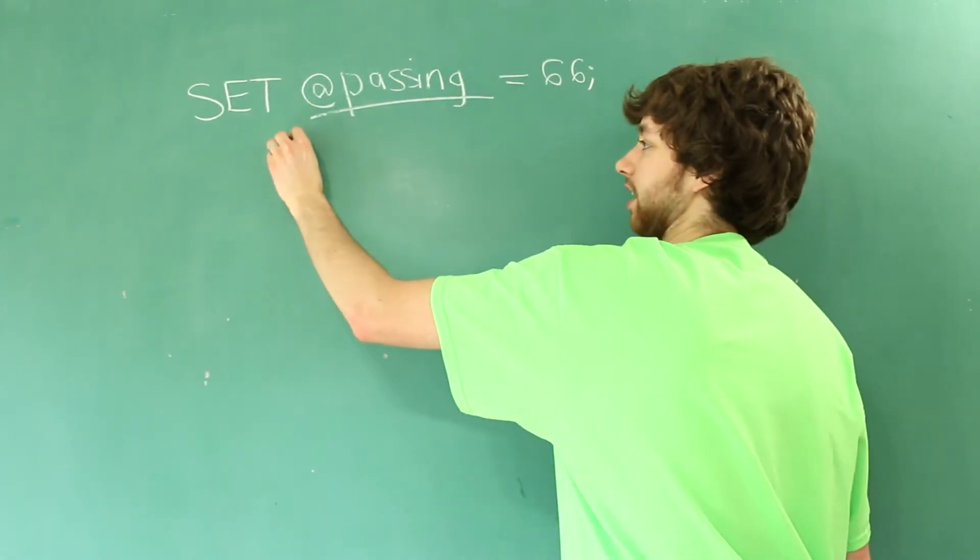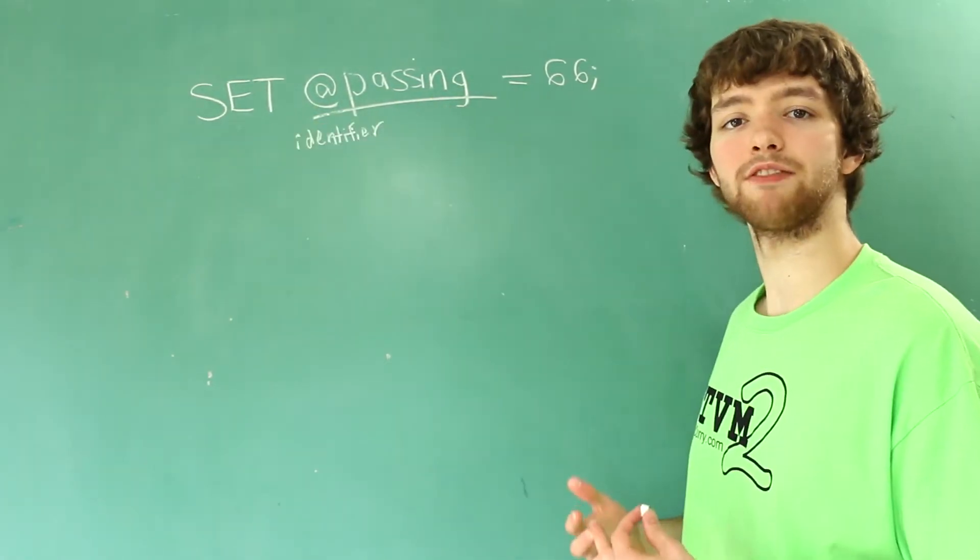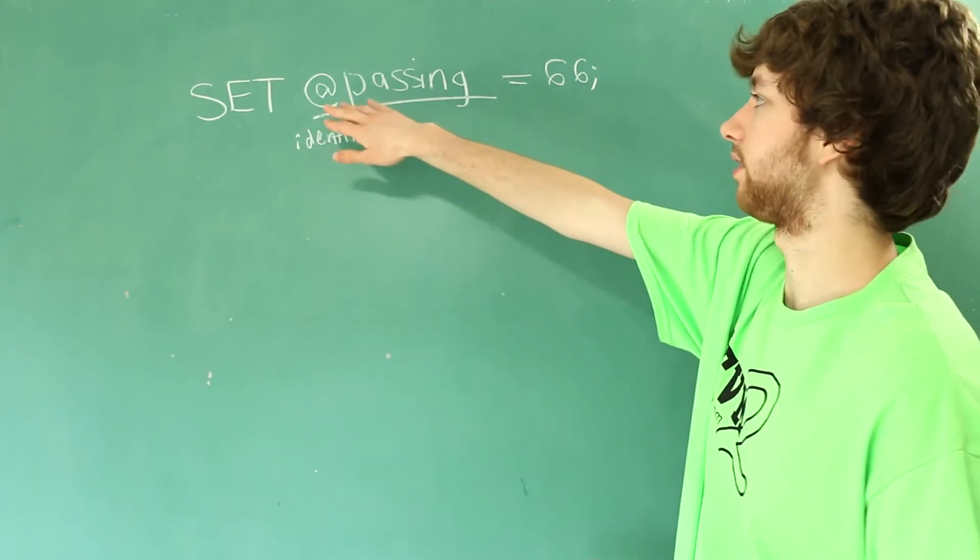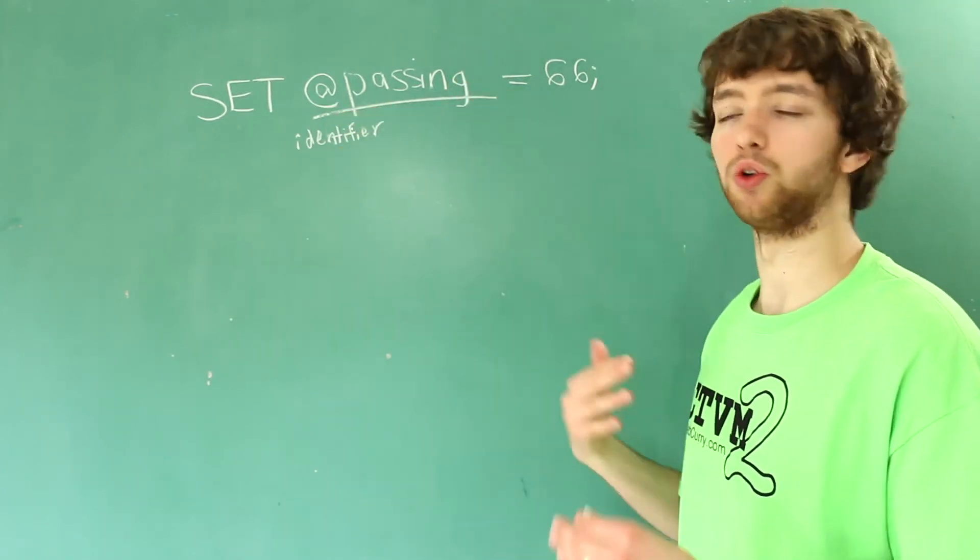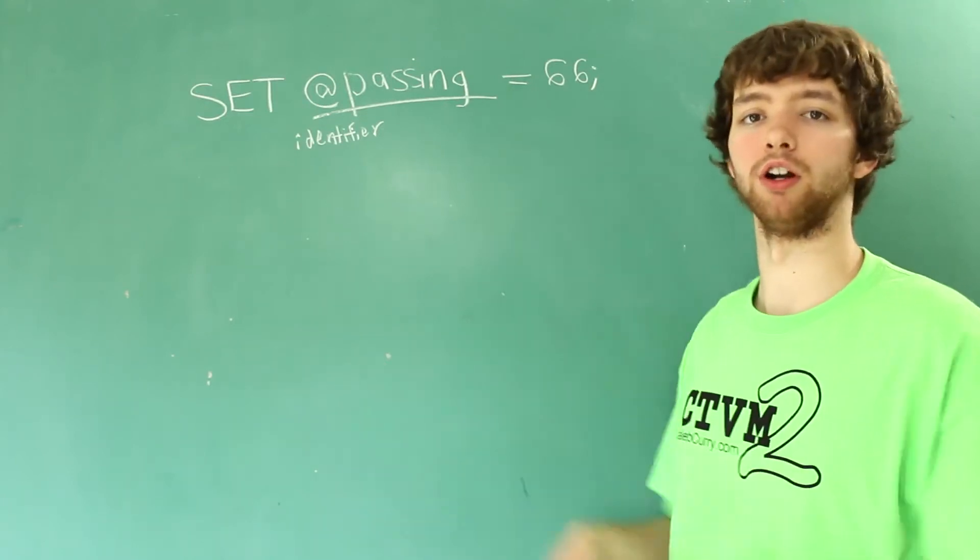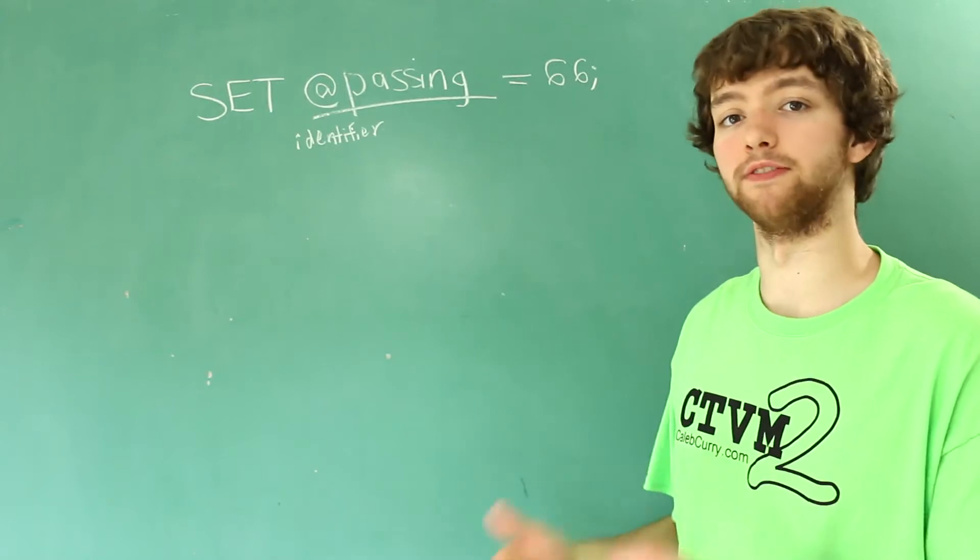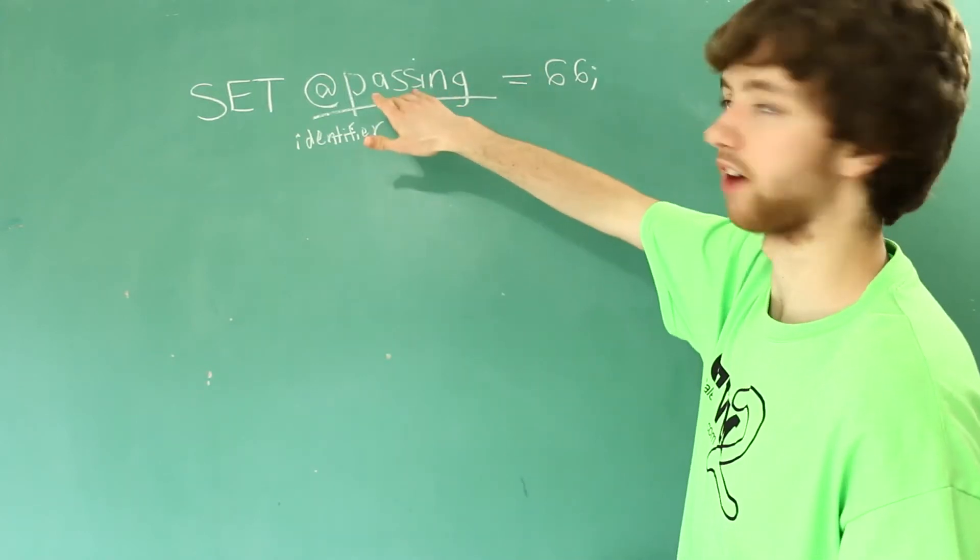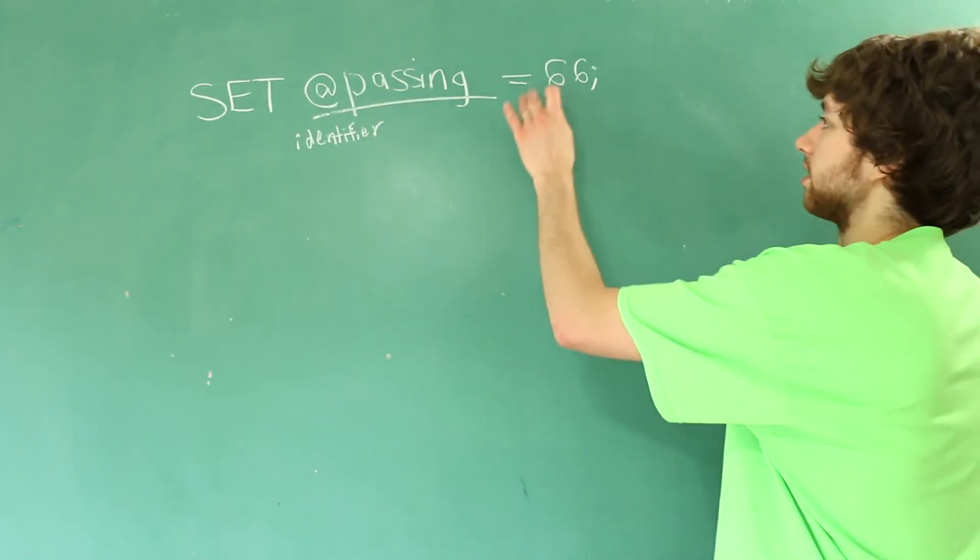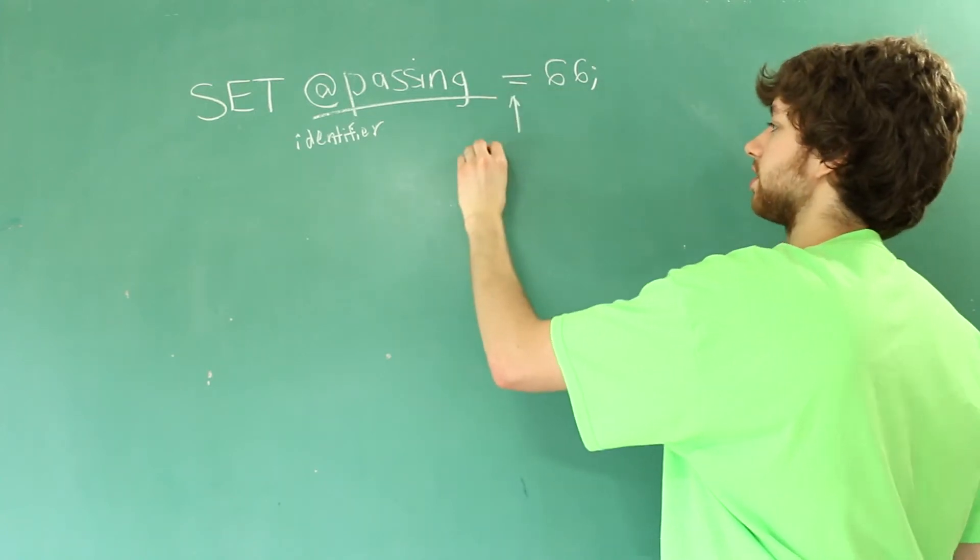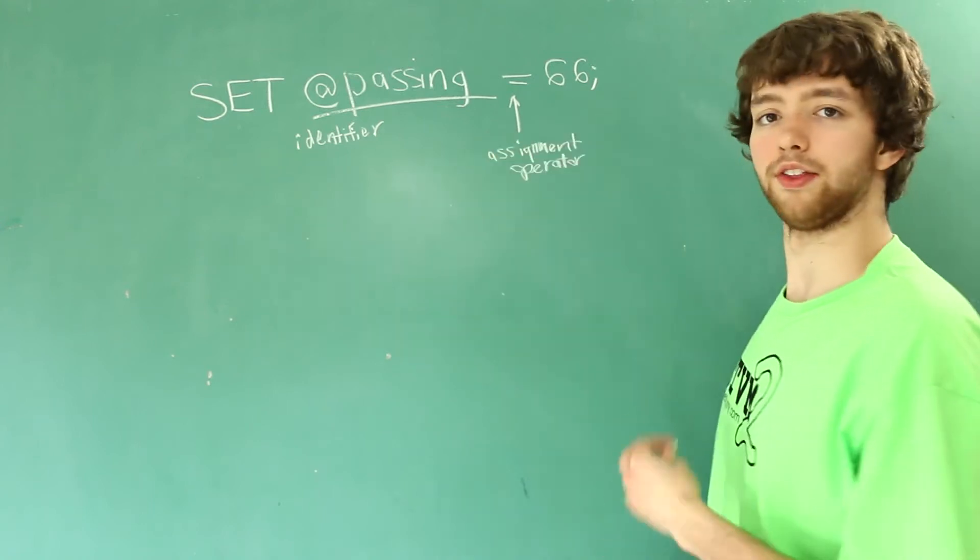In programming this is known as an identifier. Whenever you have an identifier you can change it with whatever you want, so you don't have to make this @passing, you can make it at whatever. It doesn't matter as long as you put an @ symbol so MySQL knows it's a variable. Then you use an assignment operator and you assign the value 66.